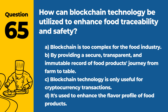Question 65. How can blockchain technology be utilized to enhance food traceability and safety? a. Blockchain is too complex for the food industry. b. By providing a secure, transparent, and immutable record of a food product's journey from farm to table. c. Blockchain technology is only useful for cryptocurrency transactions. d. It's used to enhance the flavor profile of food products. Answer: b. By providing a secure, transparent, and immutable record of a food product's journey from farm to table. Blockchain can significantly improve traceability and safety in the food supply chain.